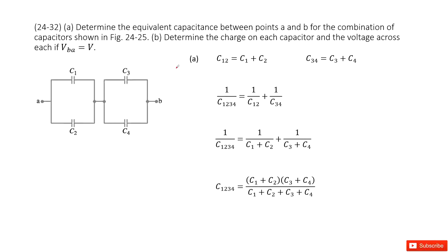You can see we have this circuit with four capacitors: C1, C2, C3, and C4. We need to determine the equivalent capacitance between points A and B.